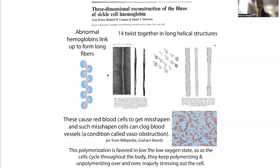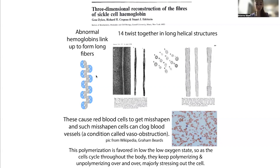This blood is going through oxygen-rich and oxygen-poor states as it travels throughout the body delivering oxygen to various tissues. So you're going to get these hemoglobin molecules linking up — polymerizing — and unlinking — depolymerizing — over and over and over, and this is going to really stress out the cell. So these cells are going to have a shortened lifespan as well.